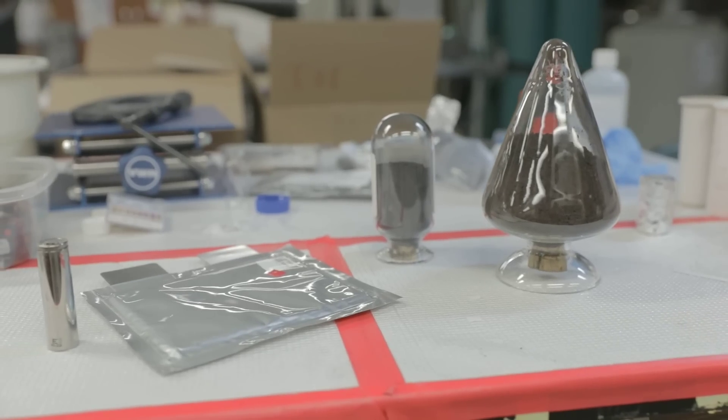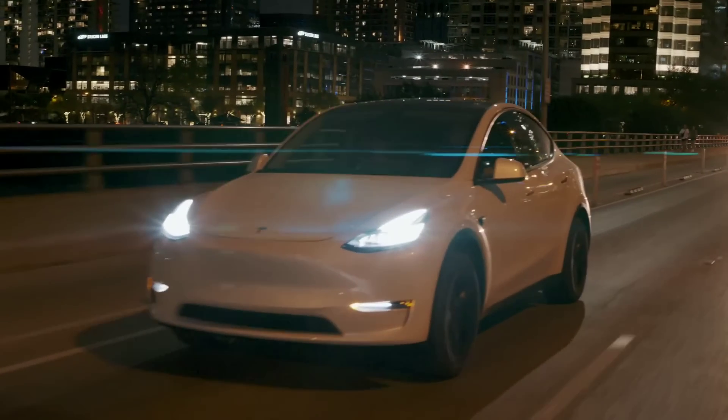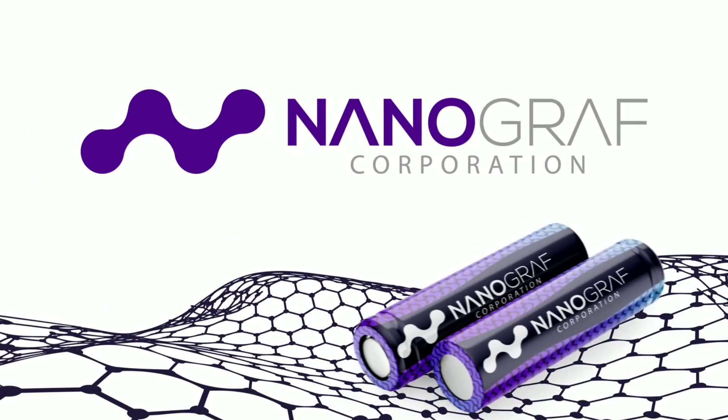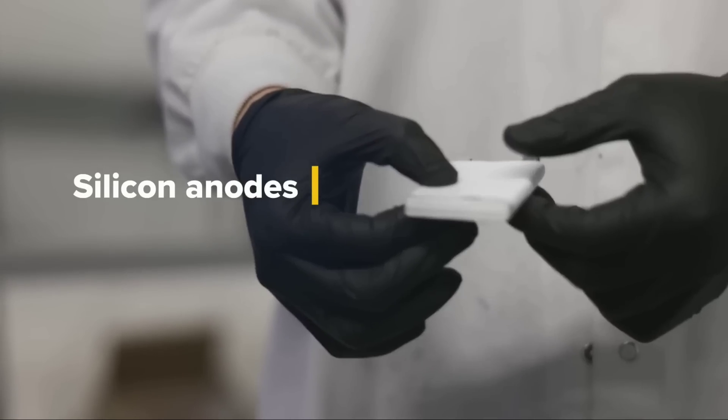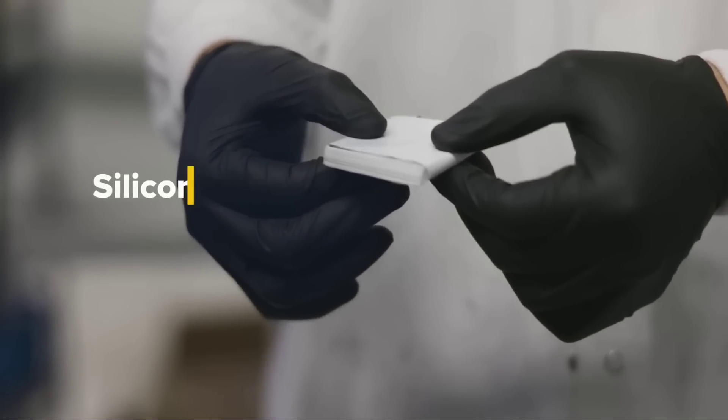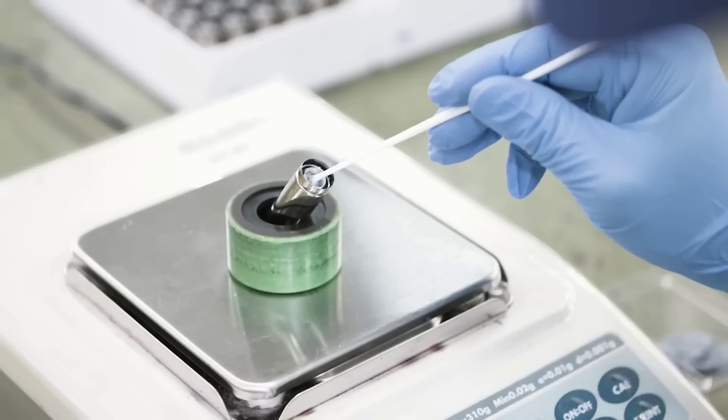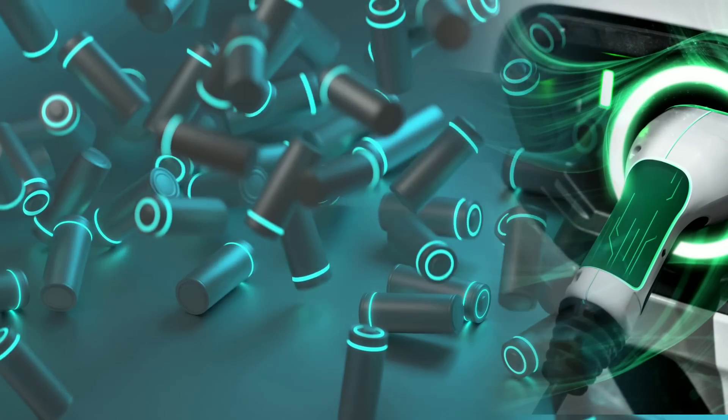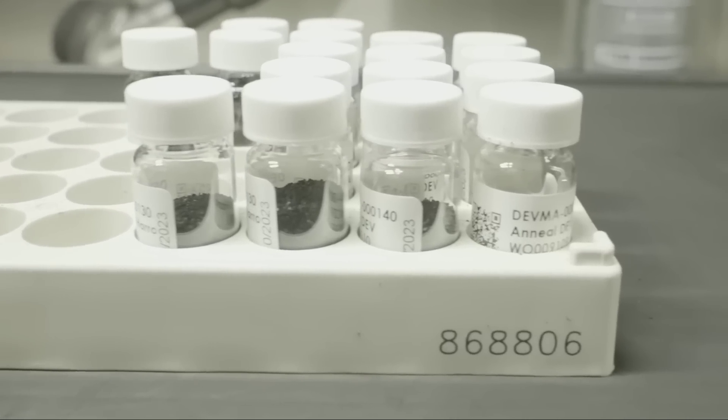A new battery technology that could change the game for electric vehicles. It's called Nanograph, and it's a silicon-based anode material that promises to deliver higher energy density, longer runtime, and faster charging than conventional lithium-ion batteries. But before we get into that, let me ask you a question.